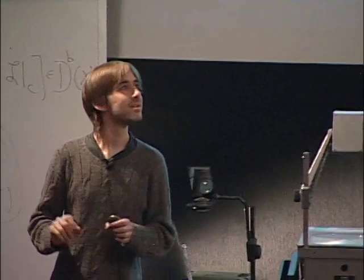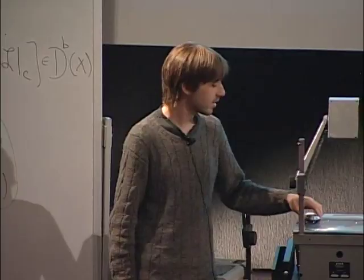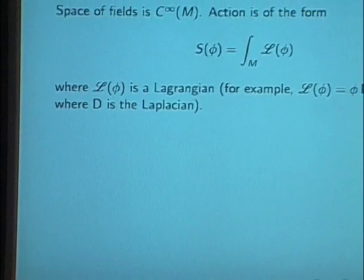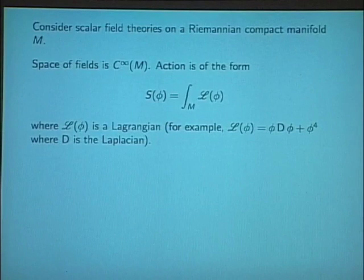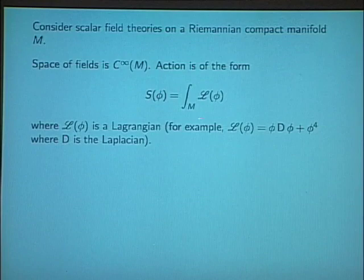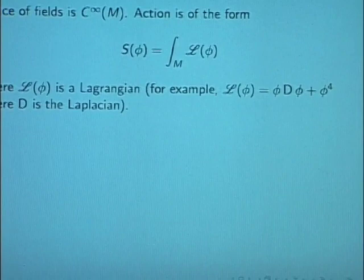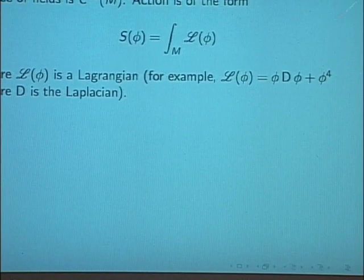This talk will be pretty vague in the technical details and very general. I wanted to talk about a certain class of field theories. A very basic example would be a scalar field theory on a compact Riemannian manifold M. We have a field phi, and the action functional is the integral of some Lagrangian. The standard example is the phi-4 Lagrangian, where we take a combination of phi Laplacian phi plus phi-fourth.